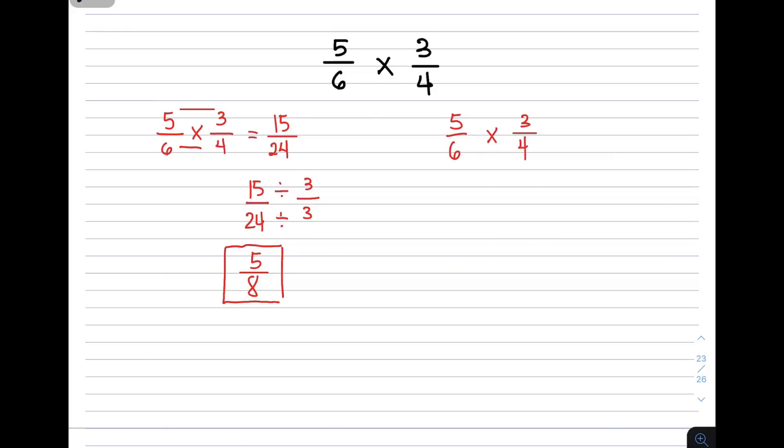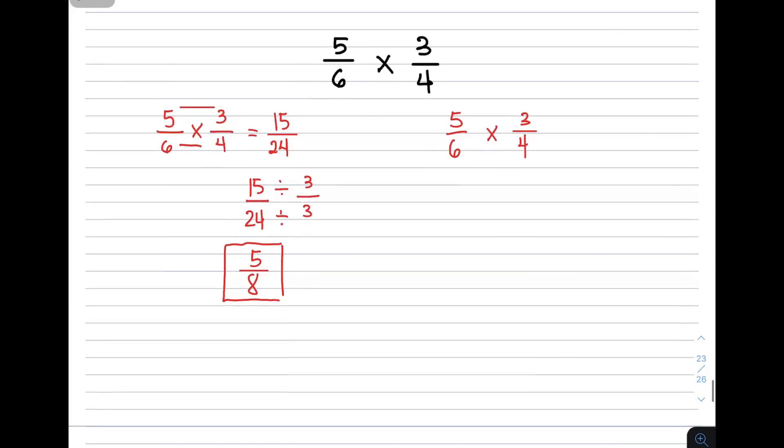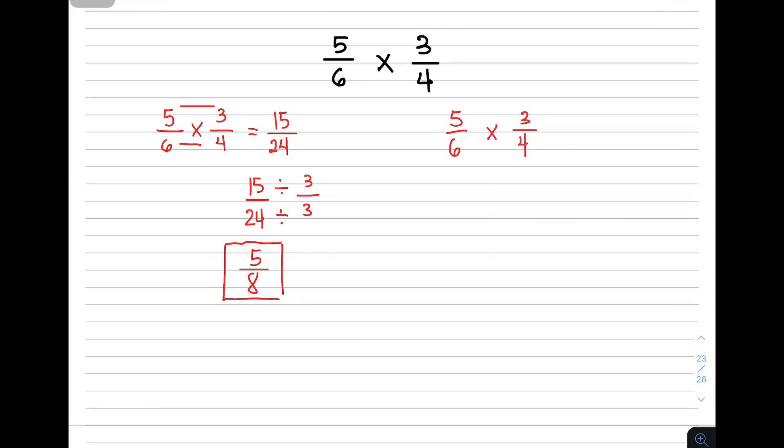So 5 over 6 times 3 over 4. You need to see if there's anything to cancel. 5 and 4 don't have common factors, but 6 and 3 both have greatest common factor 3. We can divide 3 by 3 to get 1, and 6 divided by 3 gives 2.